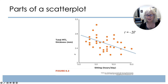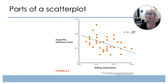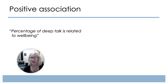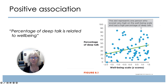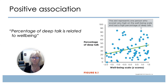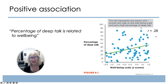Each of these dots refers to a single data point or a single person — for example, someone who sits a particular number of hours per day and has a particular thickness to their MTL. With positive associations, we're seeing that the slope goes in the opposite direction. Each of these dots refers to a particular person. We might say the percentage of deep talk is related to well-being, or associated. Our correlation here is 0.28.